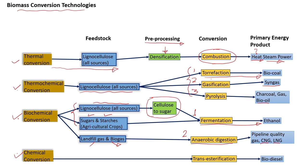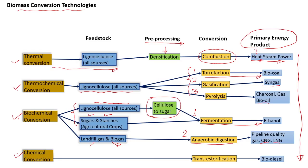The last process in biomass conversion technologies is chemical conversion. In chemical conversion, the raw materials used are mostly non-edible oils, which undergo transesterification to produce biodiesel as a product. The products discussed in this chart are primary energy products, which can further be converted to produce secondary energy products.